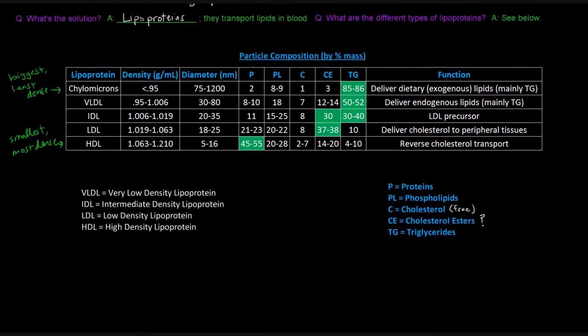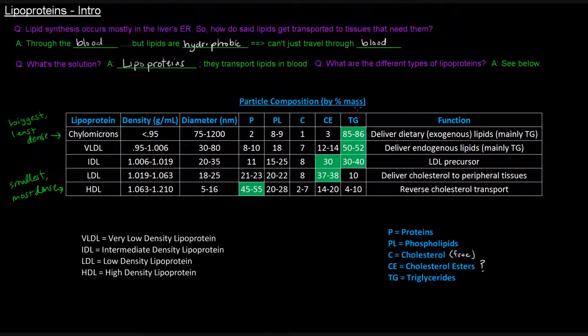I want to mention that the particle composition by percent mass is pretty important because it can help you understand these functions here. I've actually highlighted in green the highest percentage by lipoprotein particle. So chylomicrons here are 85-86% triglycerides. Their function is to deliver dietary or exogenous lipids, mainly triglycerides. They deliver the lipids, especially the triglycerides that we eat in our diets, to the cells and tissues that need them.